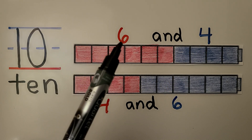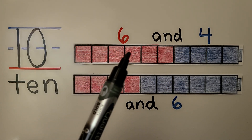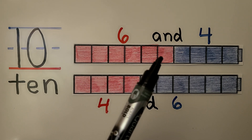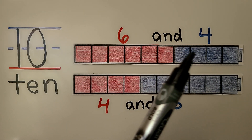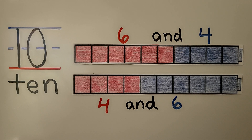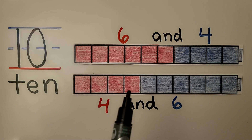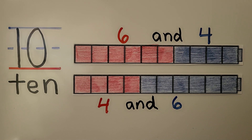So we have six red ones — one, two, three, four, five, six red ones. We have a blue four — one, two, three, four blue ones. Here we have four red ones and six blue ones, and together they are number pairs that show 10.